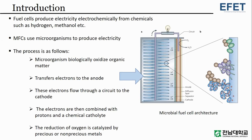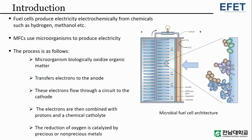Conventional fuel cells produce electricity electrochemically from chemicals such as hydrogen and methanol. MFCs use microorganisms to produce electricity. First, microorganisms biologically oxidize organic matter, then the electrons are transferred to the anode. These electrons flow through a circuit to the cathode, where they are combined with protons and a chemical catholyte.